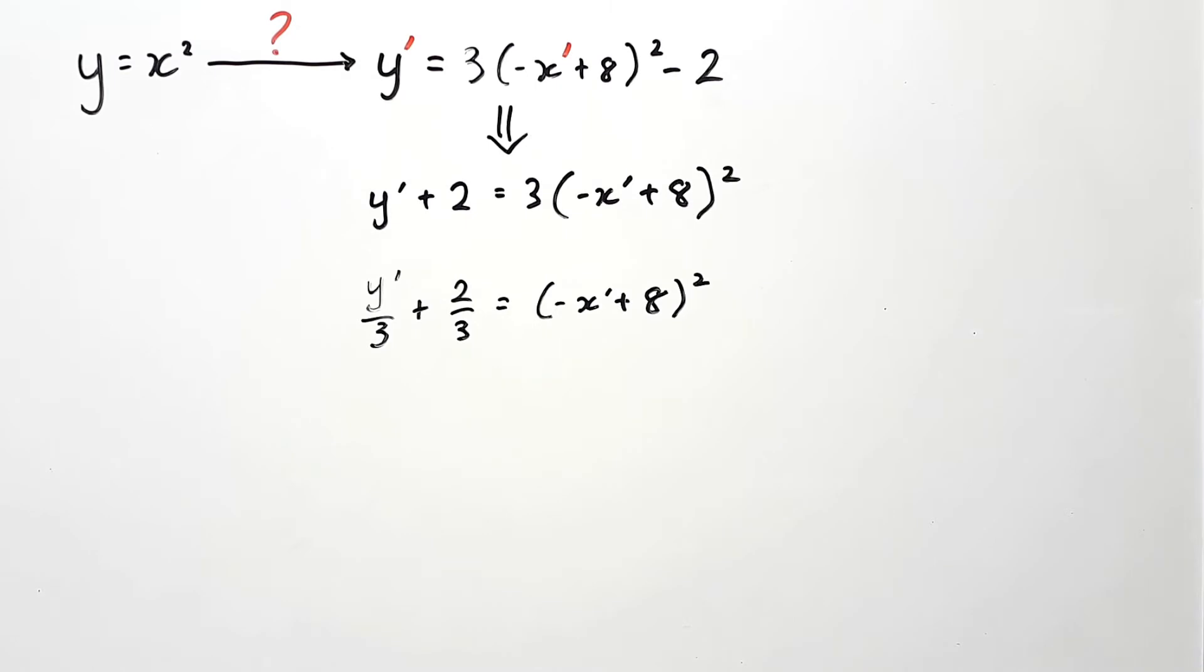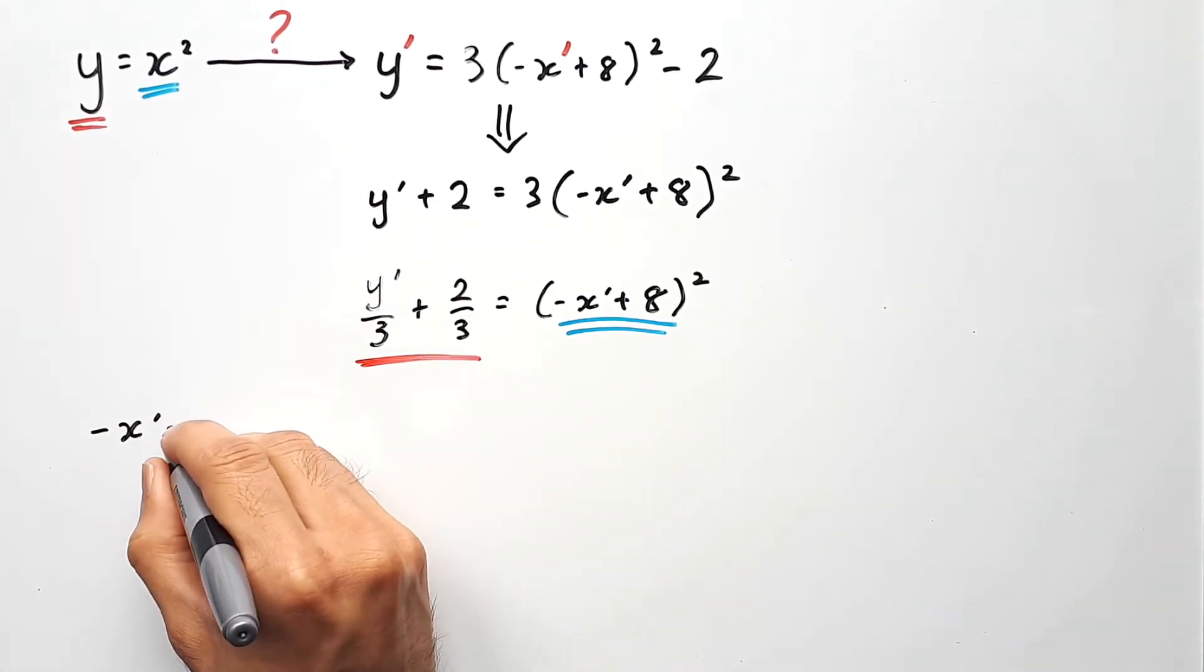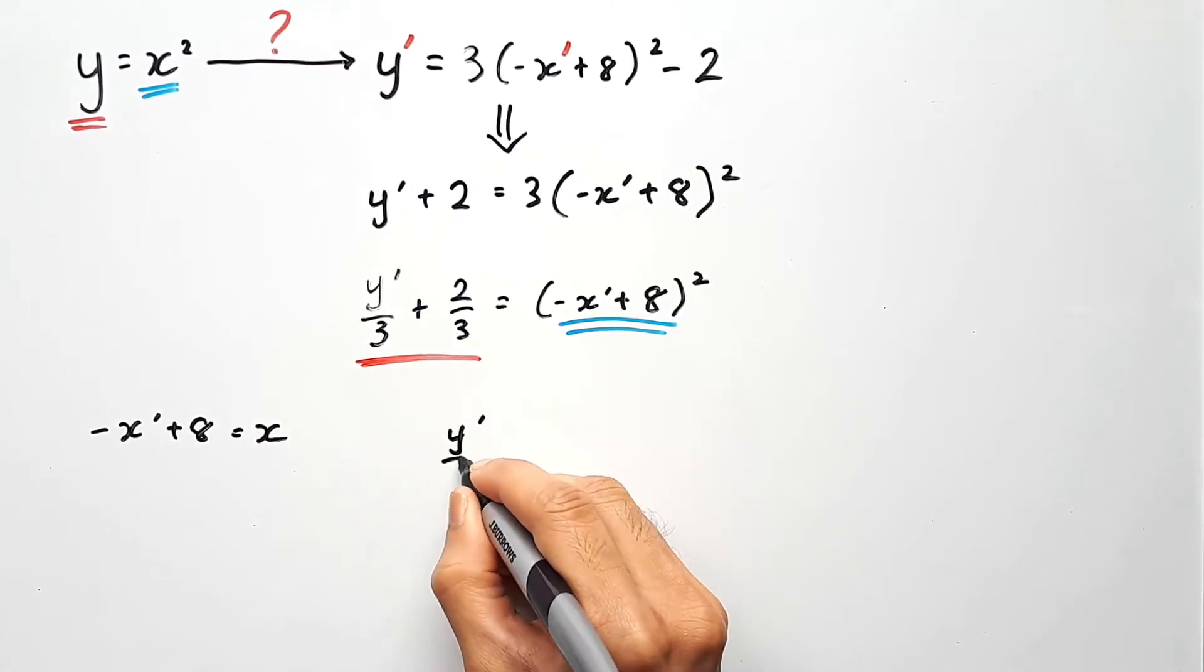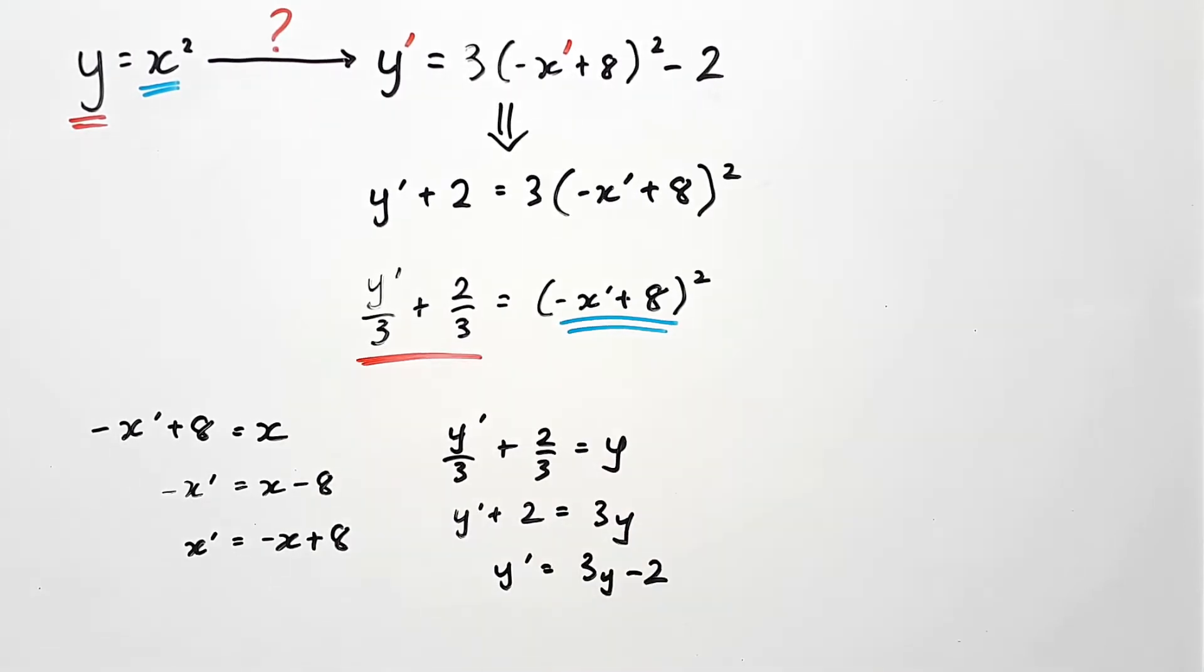Now using this image equation, we're going to compare this with the pre-image equation. So you want to compare the right-hand sides together and the left-hand sides together. So negative x dash plus 8 equals x and y dash over 3 plus 2 over 3 equals y. Rearrange them so that x dash and y dash are the subjects. And we have negative x plus 8 and 3y minus 2. These equations tell us how to transform x and y into x dash and y dash. And they are literal. So you don't have to take the opposite of anything you see. Just take it as you see it.